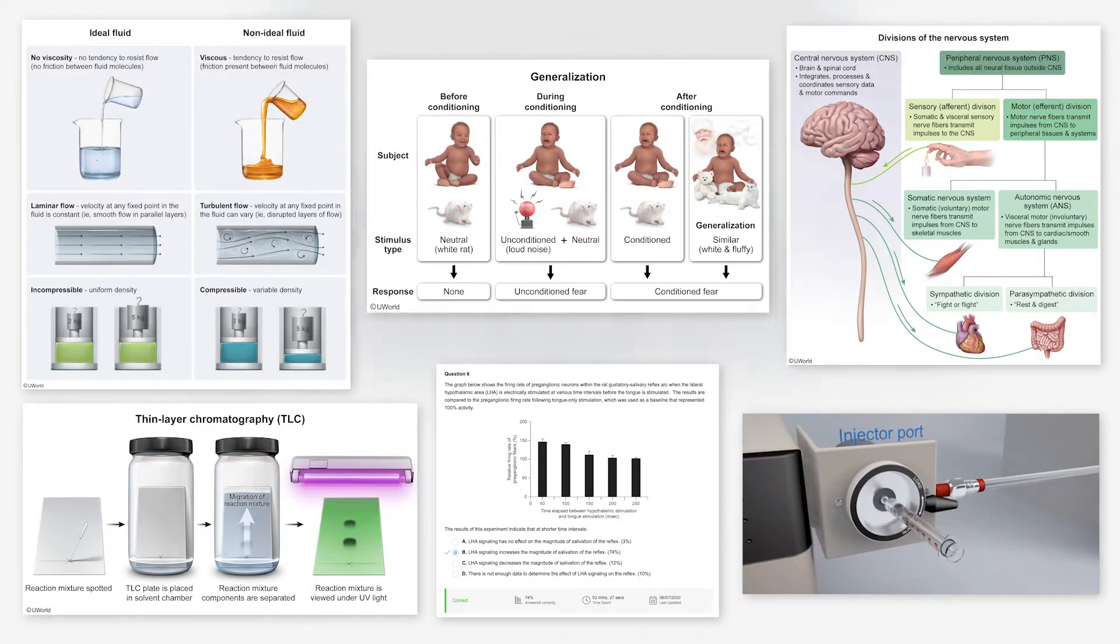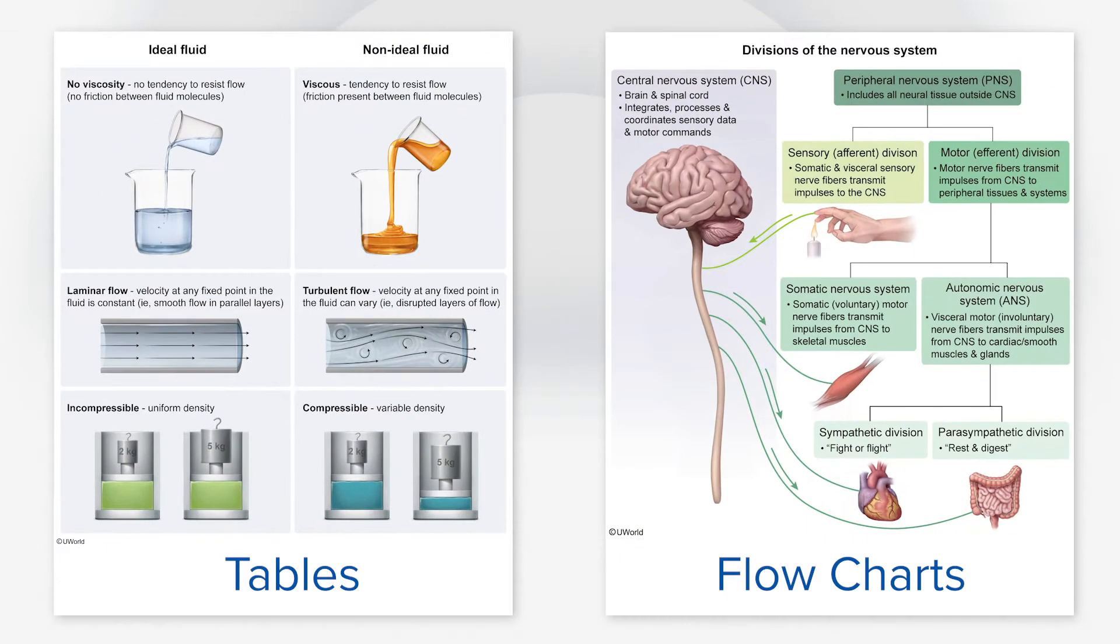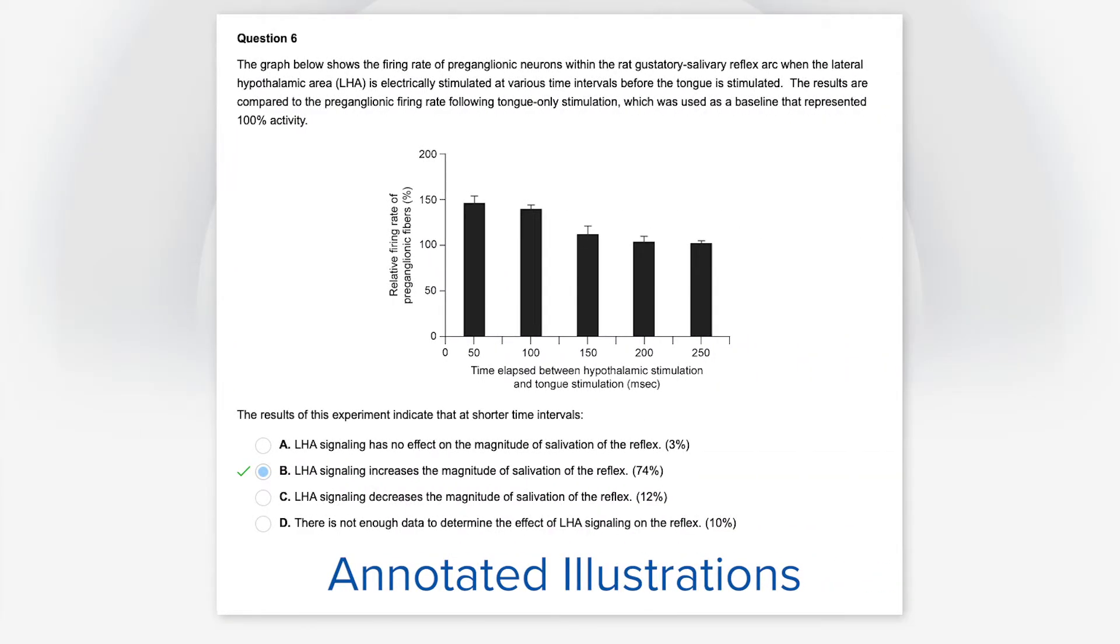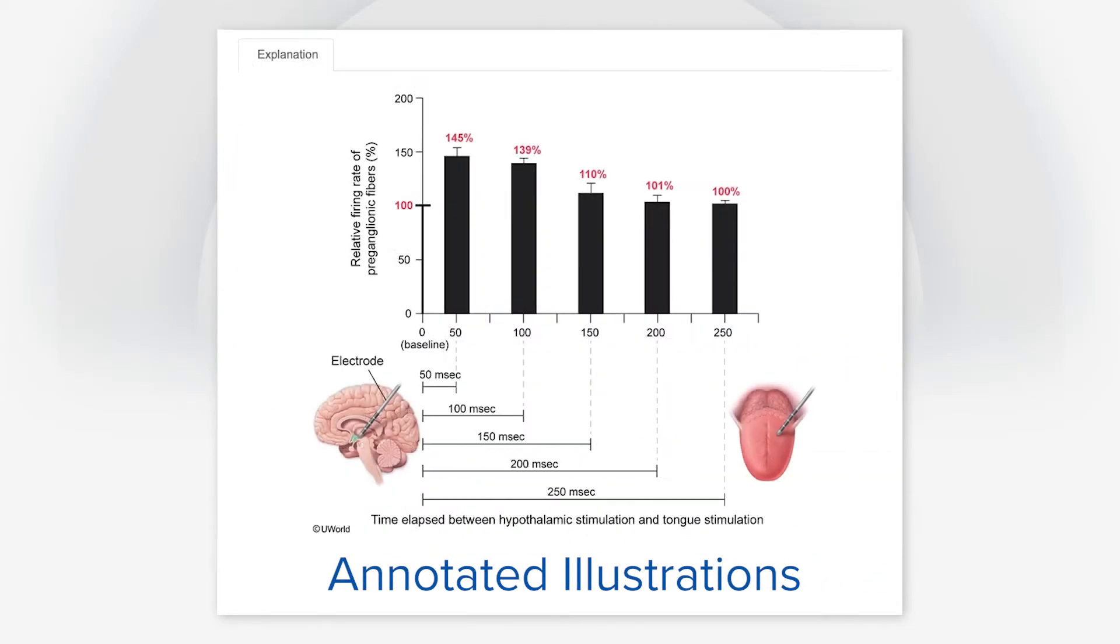Our science subject explanations provide the following: comprehensive tables and flowcharts to summarize key scientific concepts, general illustrations in every question to teach important topics, and annotated illustrations of passage figures and data to help improve your scientific reasoning.